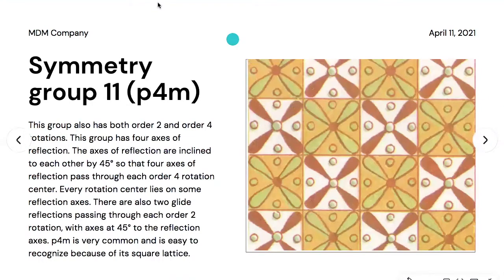Symmetry group eleven is named P4M. This group also has both order-two and order-four rotations. It has four axes of reflections inclined to each other by 45 degrees, so that four reflection axes pass through each order-four rotation center. Every rotation center lies on some reflection axis. There are also two glide reflections passing through each order-two rotation center, with axes at 45 degrees to the reflection axis. P4M is very common and easy to recognize because of its square lattices.